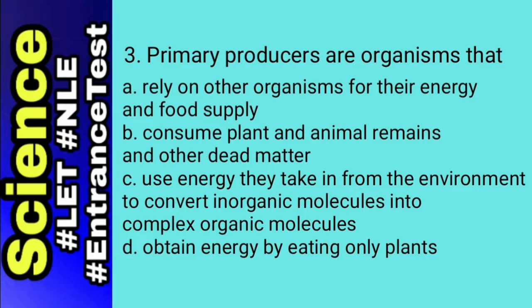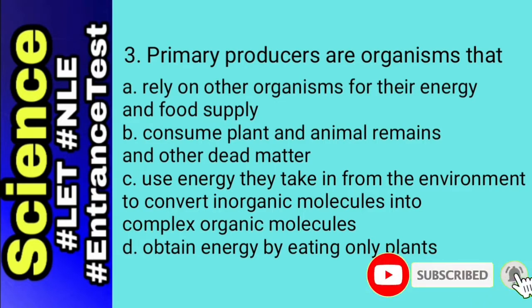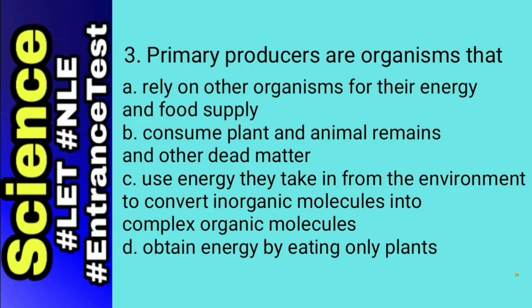For this number, let's define primary producers first. Primary producers are the first producers of energy-rich compounds that are later used by other organisms. To answer number 3, let's do elimination. Choices A, B, and D are all pertaining to consumers. That's why the answer for this number is letter C.